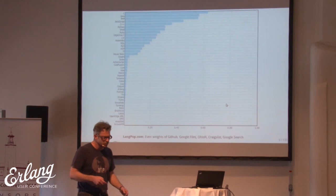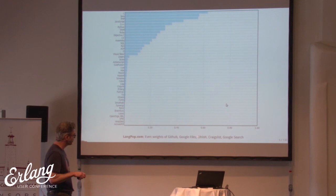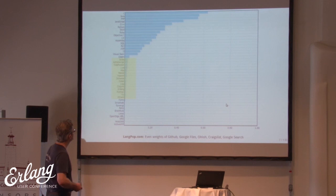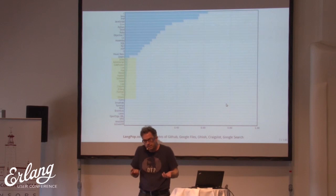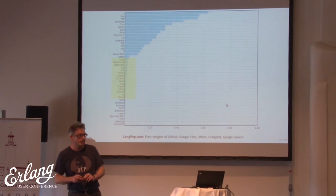Here's another view — this is LangPop, an index generated by a weighting of GitHub, Google Files, Ohloh, Craigslist, and Google Search. We have a similar neighborhood — Erlang is grouped again with the usual suspects: Scala, Lua, Ada, Pascal, Haskell, Lisp, Clojure, Erlang, right above Fortran. I don't think it's controversial to say the cool kids don't use Erlang.